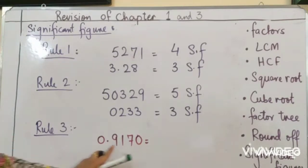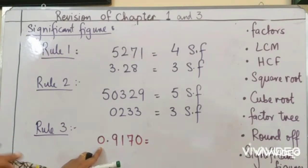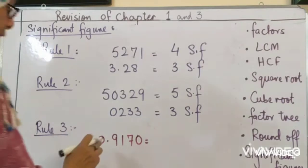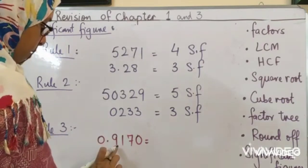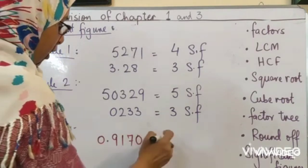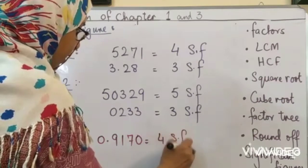Zero after a non-zero digit are significant. So this will be significant. And this will not be a significant number. So we ignore this and count this. 1, 2, 3, 4. Four significant figures.